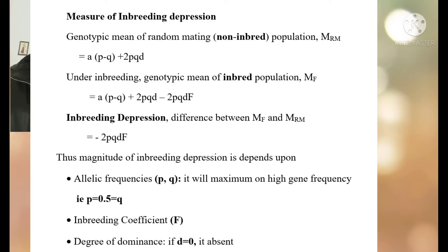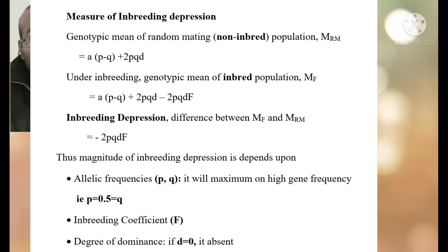The mathematical expression for inbreeding depression is −2PQDF. Here, P and Q are allelic frequencies, F is the inbreeding coefficient, and D is the degree of dominance. Therefore, inbreeding depression depends upon allelic frequency, the value of the inbreeding coefficient, and the degree of dominance.